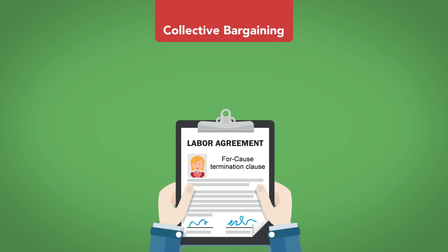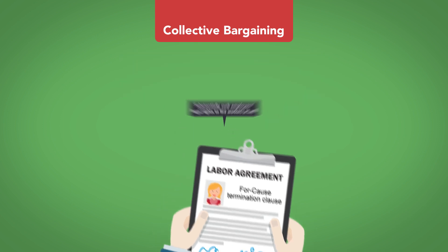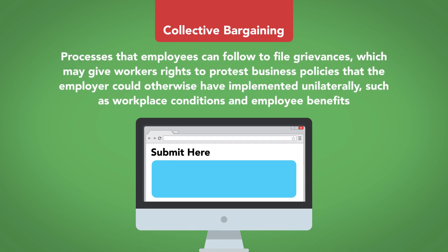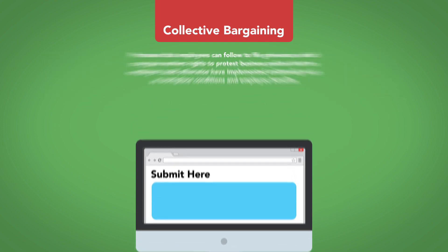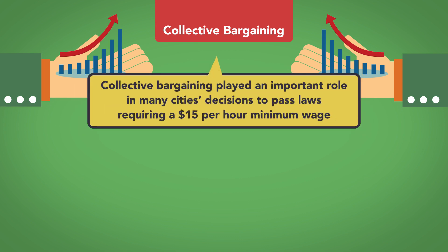For example, unions often negotiate for-cause termination clauses in employment agreements, which substantially curb employers' legal rights to fire workers at will. Collective bargaining agreements also typically include processes that employees can follow to file grievances, which may give workers rights to protest business policies that the employer could otherwise have implemented unilaterally, such as workplace conditions and employee benefits. Labor unions have a demonstrated track record in securing higher wages for their members and other workers. For example, collective bargaining played an important role in many cities' decisions to pass laws requiring a $15-per-hour minimum wage.